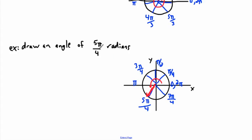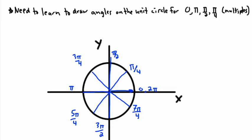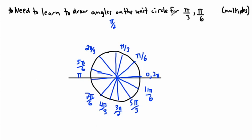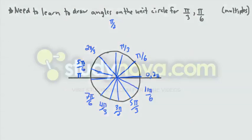I hope this explains how to draw your angles. Take your time with them because you really need to get used to them. Practice drawing the pi over twos and pi over fours, and separately do your pi over threes and pi over sixes. That's really good practice to know how to do these well.